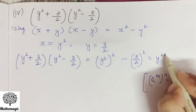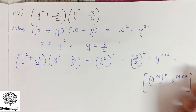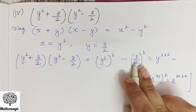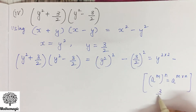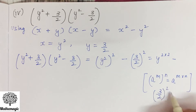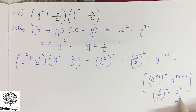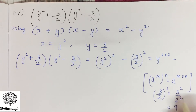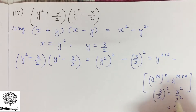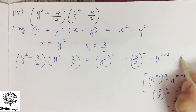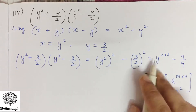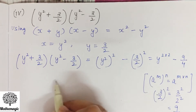So y 2 into 2 that is 4 goes here, and 3 by 2 ka whole square — 3 square upon 2 square. We will use 3 square is 9 (3 into 3 is 9) and 2 into 2 is 4, so we write here 9 by 4. So the answer is y to the power 4 minus 9 by 4.